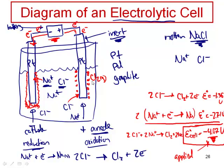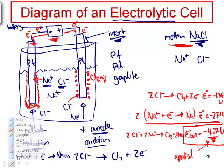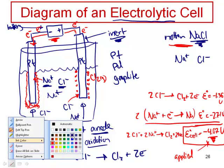Now, besides electrolytic cells being new, another kind of new idea here is the thing that we're electrolyzing is molten sodium chloride. So far we've been looking at solutions; here this is a molten salt. Sometimes you'll electrolyze a molten salt, like in the case that you want to obtain sodium metal or pure chlorine gas. But sometimes also we'll electrolyze solutions. Let's look at how that might be different. Let's consider the electrolysis of an aqueous solution.